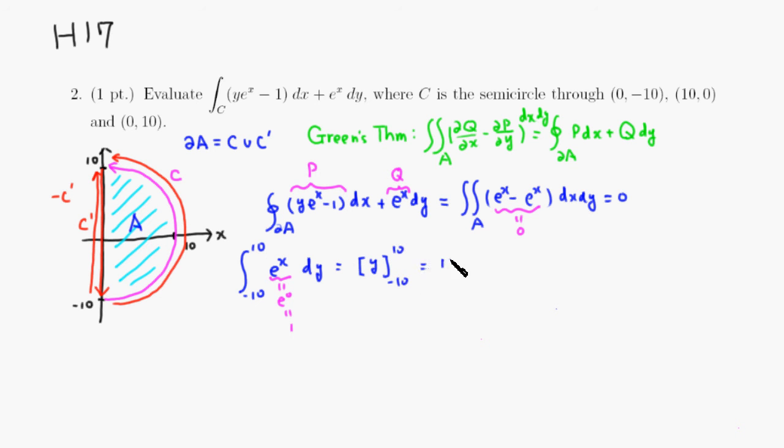So this is going to be y going from negative 10 to positive 10. So it's going to be 10 minus negative 10, which is going to be 20. So that's that.